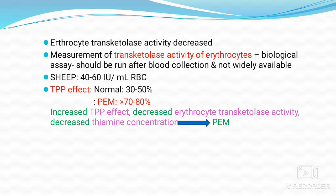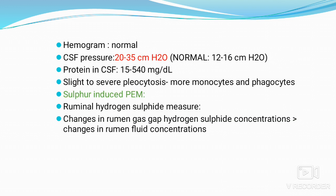Measurement of erythrocyte transketolase activity is an important biological assay that should be run soon after blood collection; it is not widely available. The TPP (thiamine pyrophosphate) effect in PEM is greater than 70–80%, while the normal range is 30–50%. Increased TPP effect, decreased erythrocyte transketolase activity, and decreased thiamine concentrations together indicate PEM. The hemogram is normal. Cerebrospinal fluid pressure increases from the normal 12–16 cmH₂O to 20–35 cmH₂O. CSF protein is also increased and there will be slight to severe pleocytosis, with increased numbers of monocytes and phagocytes.